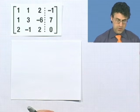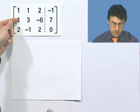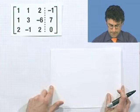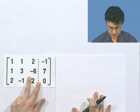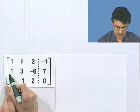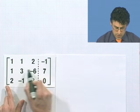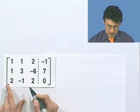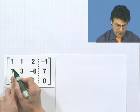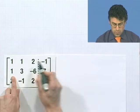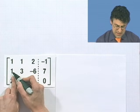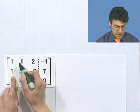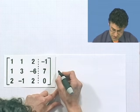The first thing I want to do is make this a 0 and make this a 0, so I just have 1, 0, 0. I'm going to multiply this row by negative 1 and then add it to this row. If I multiply this r1 by negative 1 and then add it to this, I'd see negative 1 and 1 is 0.